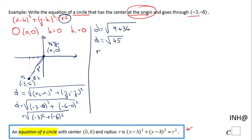This d is nothing else than the radius of this circle. And if you notice, we need the radius squared, and the radius squared will be d square root of 45 squared, which is going to give us just 45. So we have now everything we need.